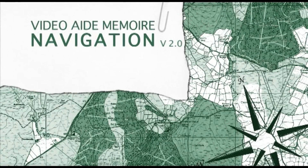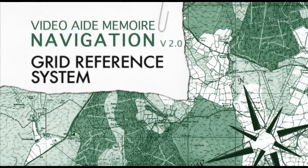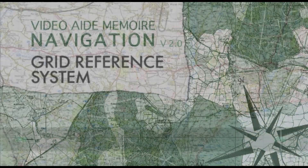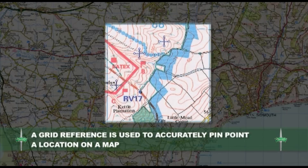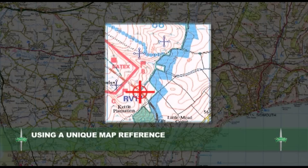In this training aid, we will look at the grid reference system. A grid reference can be used to accurately pinpoint any location on a map through use of a unique map reference.